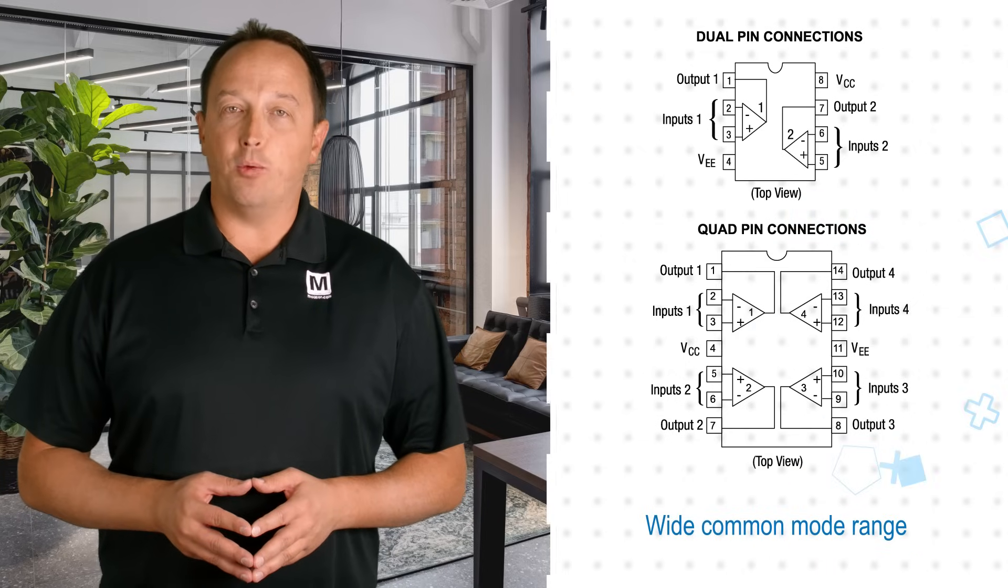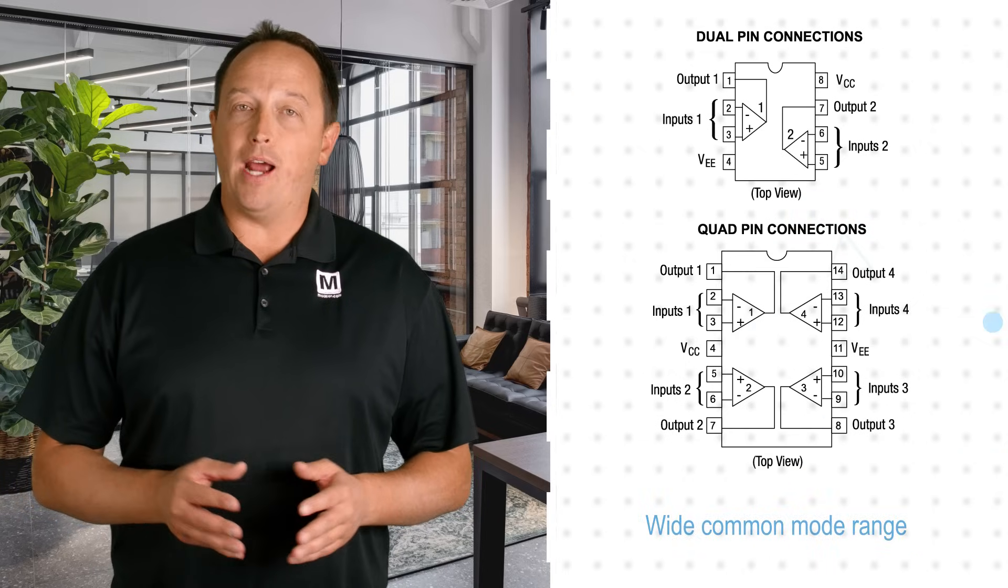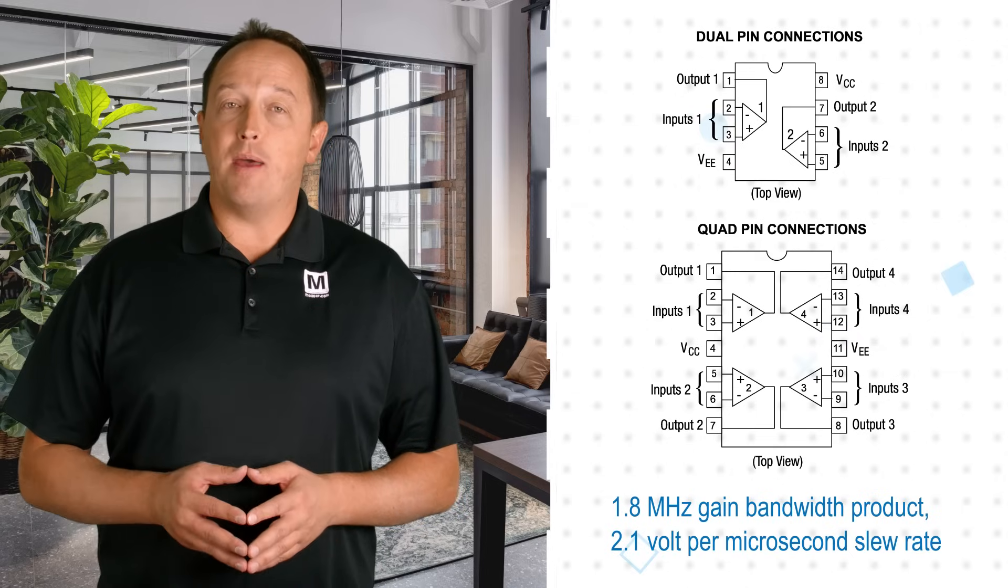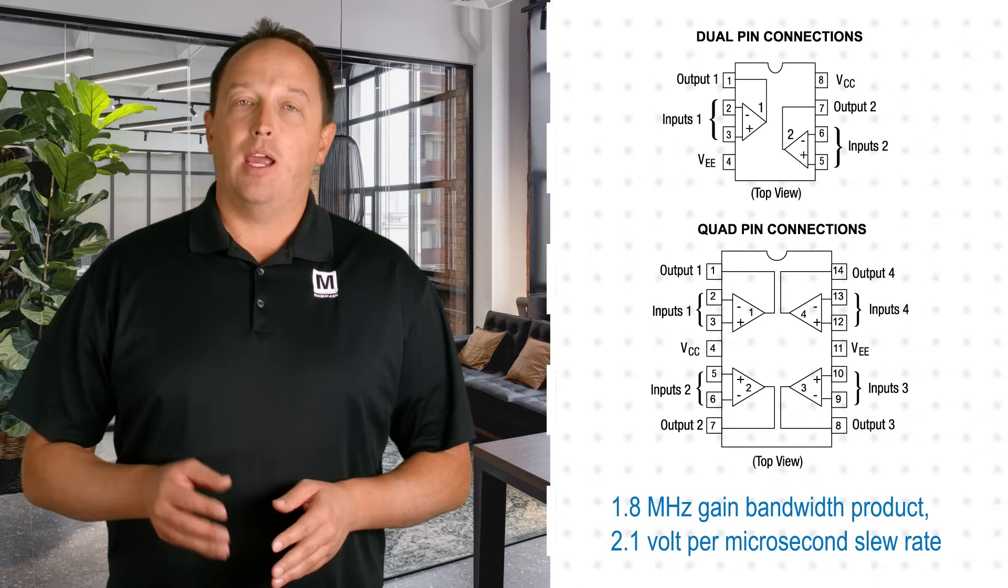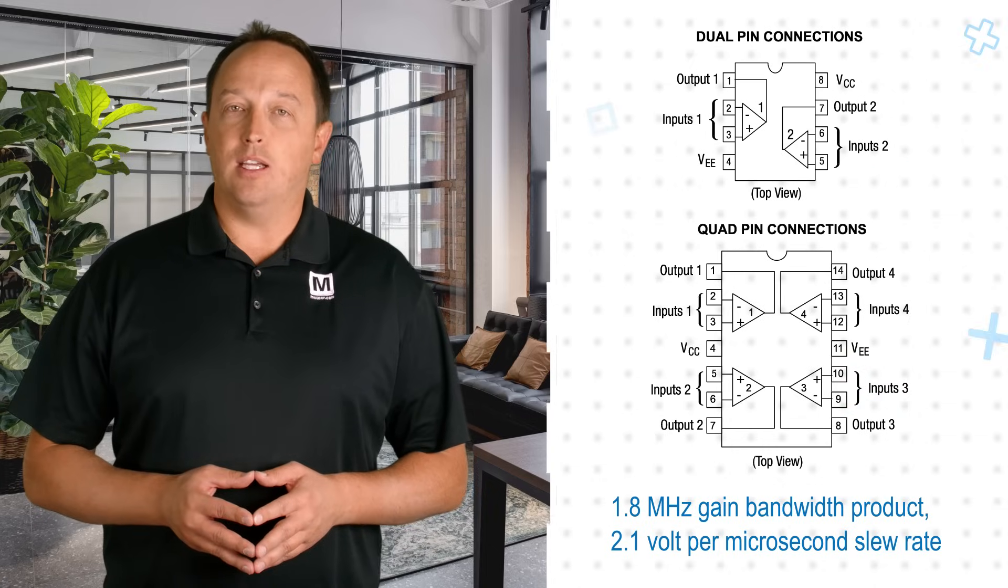The amplifiers have a wide common mode range that includes ground, a wide output voltage swing, 1.8 megahertz gain bandwidth product, 2.1 volt per microsecond slew rate, and a 0.03 percent THD.